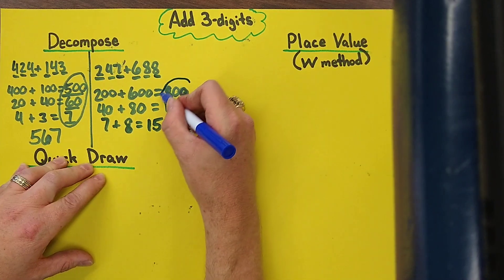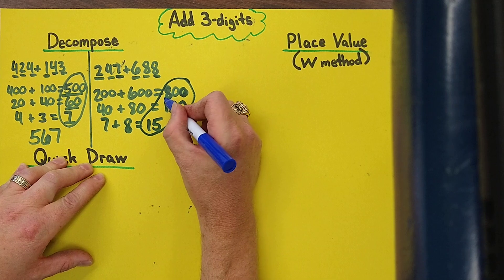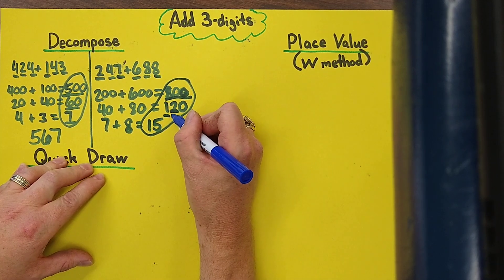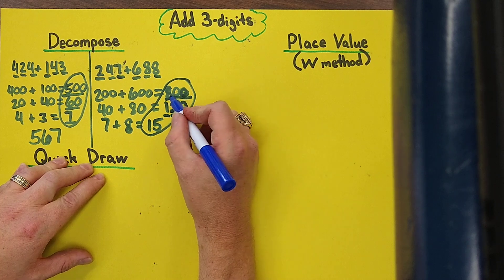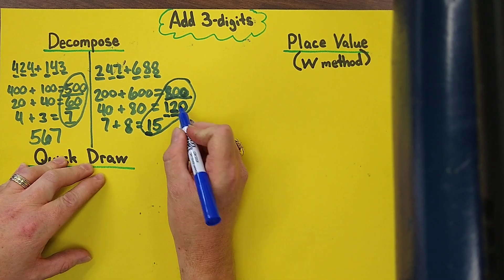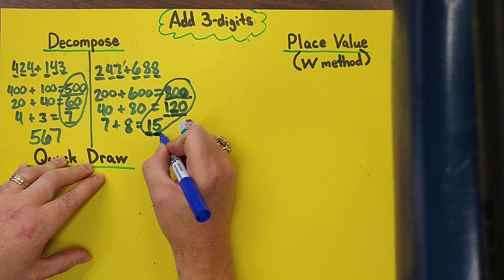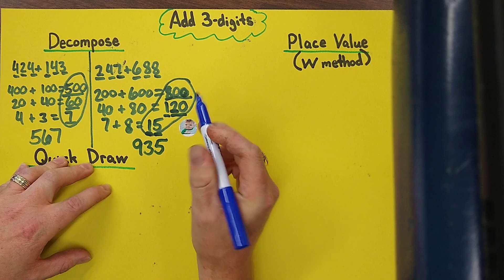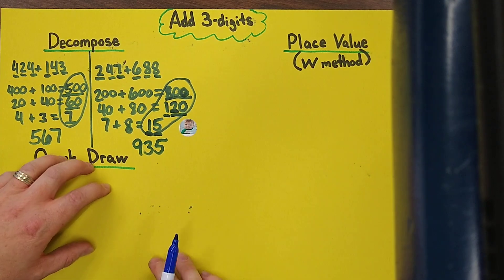So now just like we did over here, it's time to recompose. So now we have 800 and another hundred gives you 900, and 20 more will give you 920, and another 10 would be 930, and 5 more: 935. That's a pretty big number and that time we did have to regroup.